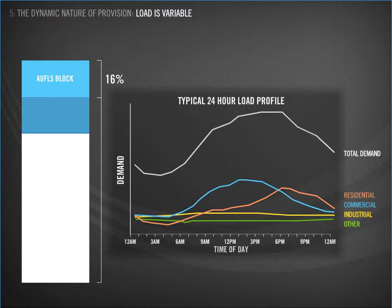Total demand changes depending on the time of day. Typically, residential customers use more in the morning and in the evening. Commercial and industrial users might have different profiles. The AUFLS blocks are selected at the point in time where total demand is at its lowest, to meet the minimum requirement of the Electricity Industry Participation Code.